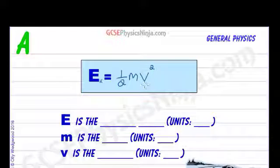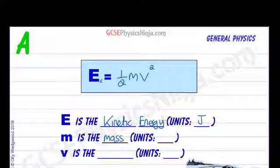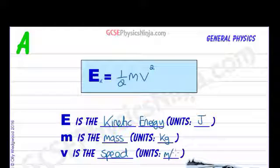You can use speed or velocity. E is the kinetic energy. M is the mass. Oh sorry, kinetic energy units are of course joules as all energy types are in joules. M is the mass. The standard unit for mass is kilograms in physics. And V is the speed. Units meters per second. Great.